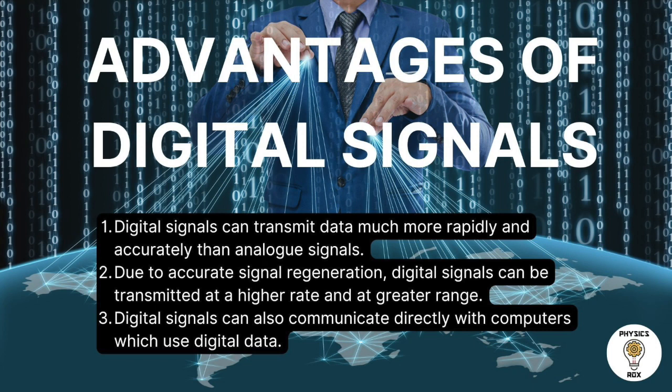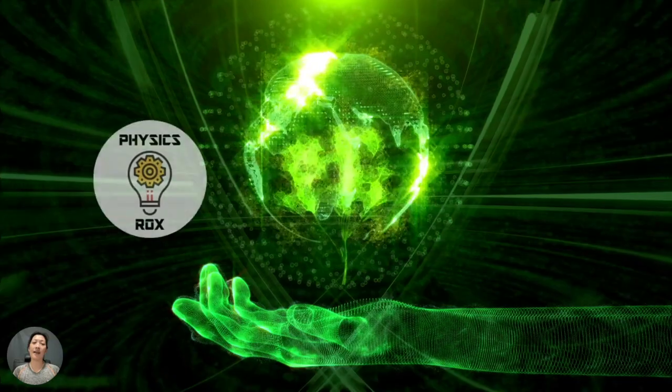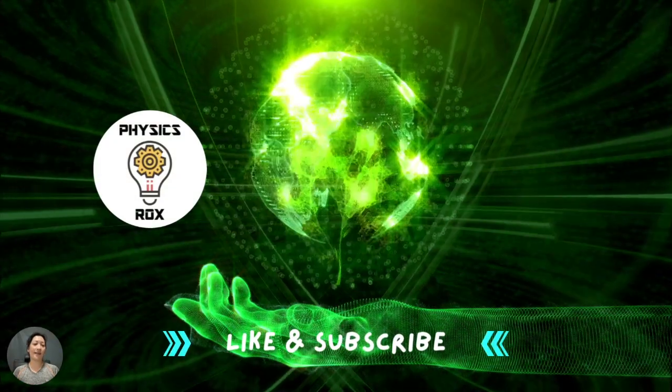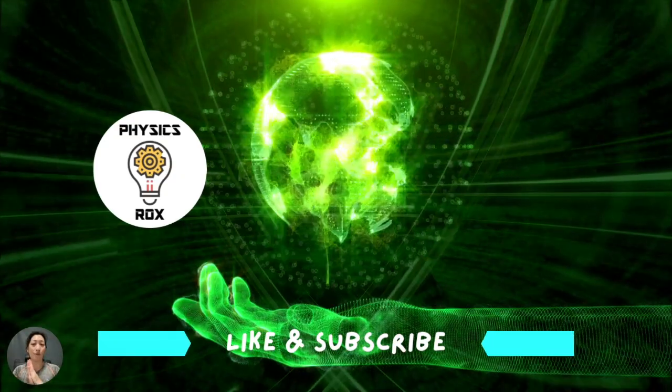Additionally, digital signals can communicate directly with computers, which use digital data. Machines can pick up digital values directly from a measuring instrument and use that data to process complex mathematical functions or trigger more complex circuits, making digital signals far more versatile and useful in modern applications.